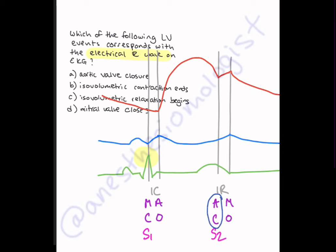Here we see that the aortic valve closure happens much after the R-wave. Isovolumetric contraction ending is also shortly after the R-wave. Isovolumetric relaxation beginning is much later after the R-wave, and the mitral valve closing is the only thing that lines up perfectly with the R-wave.